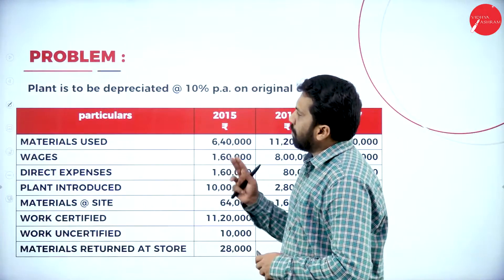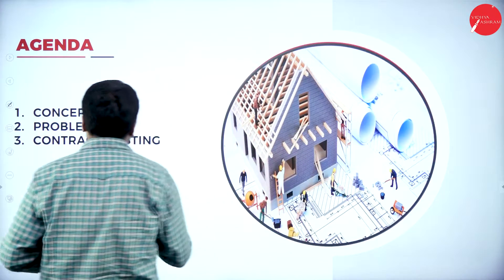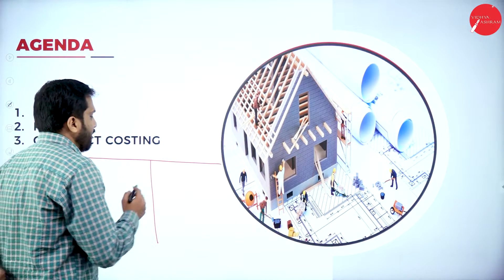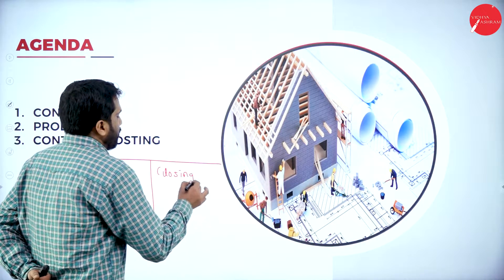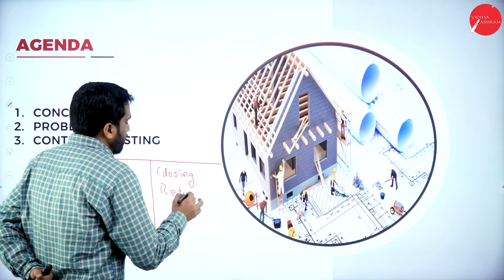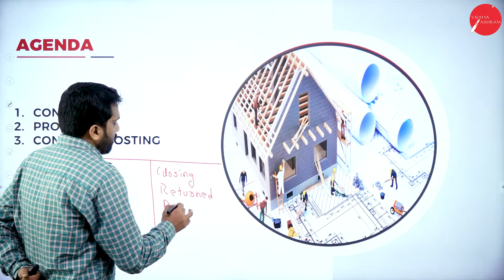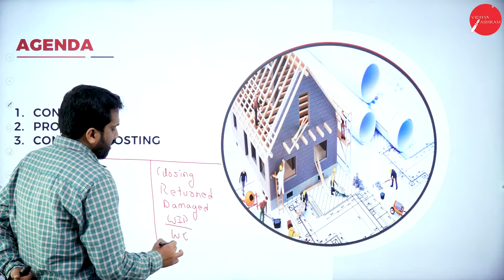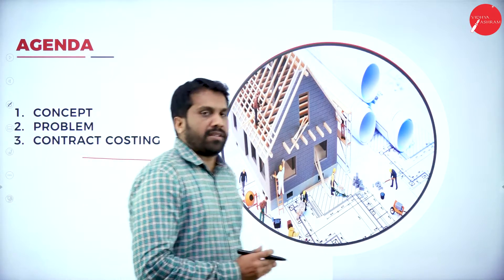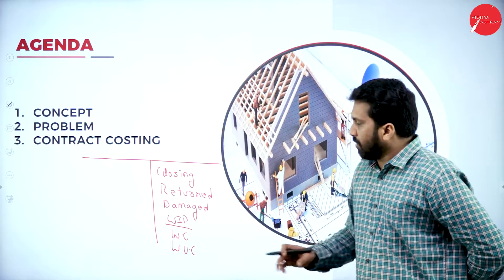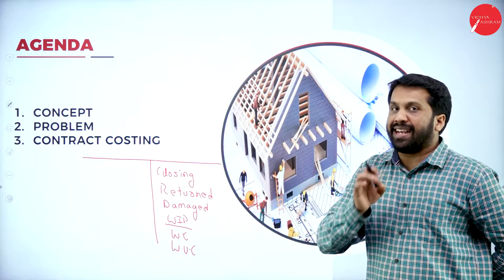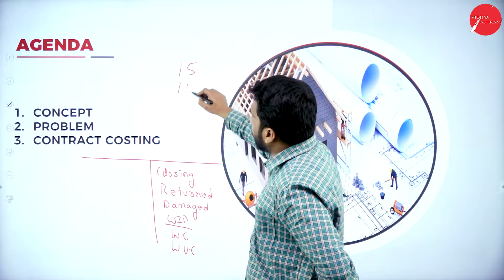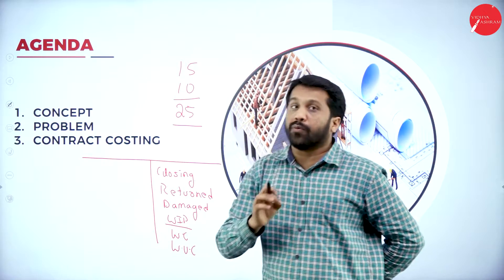Before we go further, let me remind you of the format. These are your columns — what will come under debit side and what will come under credit side. Under the credit side: any closing balances, anything which is returned, anything which is damaged, and work in progress — under that, work certified and work uncertified. These are the things which come under credit side. Please write this down because there is a logic. If you remember this, you can do any number of problems on contract. This problem will come for 15 marks and 10 marks — total 25 marks. Very important.